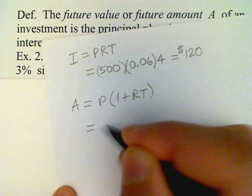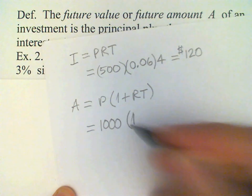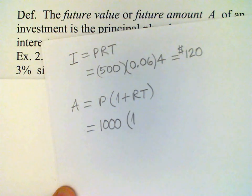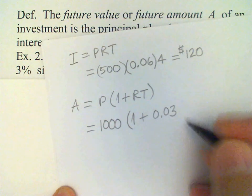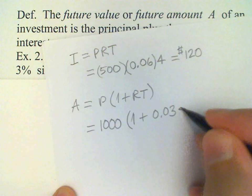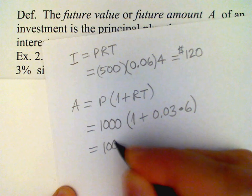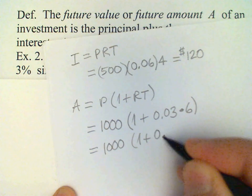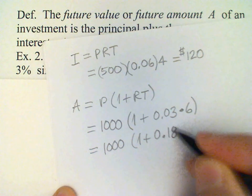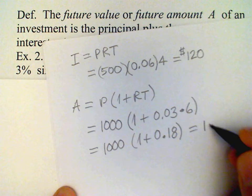In this case, P is $1,000. R is 3%. Convert that to a decimal, so we have 0.03, and then T is 6. So that's 1,000 times (1 + 0.18). And the answer is $1,180.